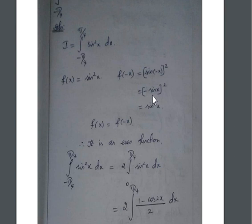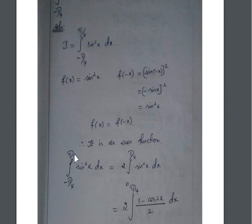The third integral involves sin²x. When we apply f(−x), it becomes (−sinx)² = sin²x, since the power is even and minus × minus = plus. Both values are equal, so it is an even function. Using the property for even functions: ∫₋ₐᵃ f(x)dx = 2∫₀ᵃ f(x)dx, we write 2 times ∫₀^(π/4) sin²x dx.